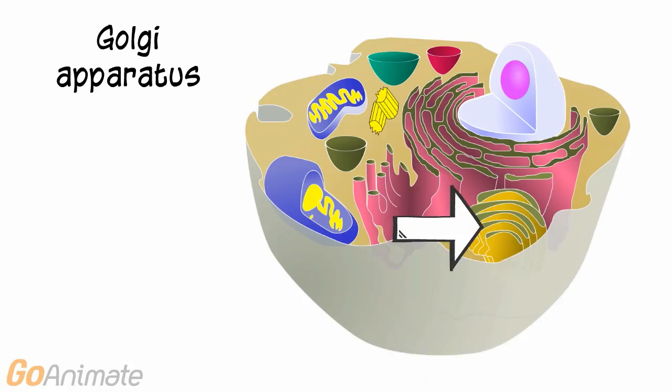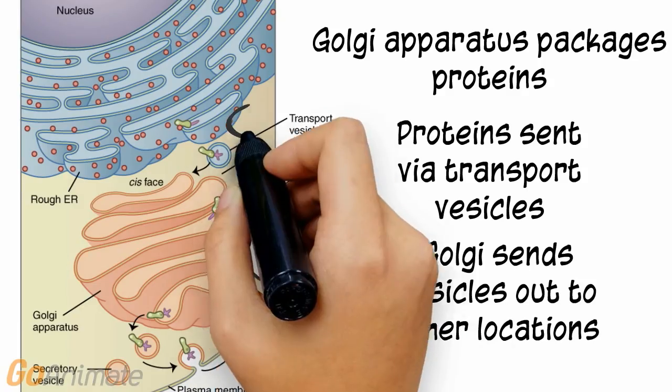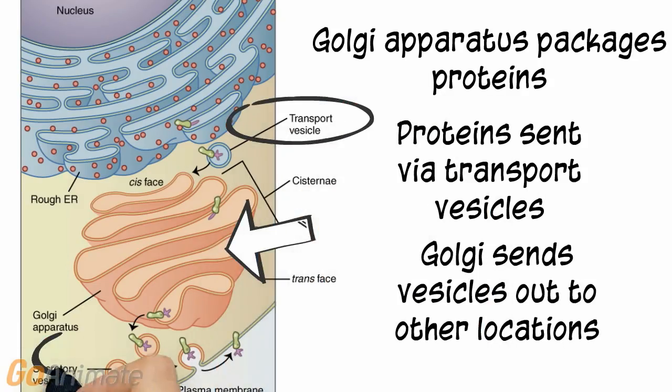Let's look at the Golgi apparatus next. The Golgi apparatus packages proteins in vesicles and sends them to other locations.